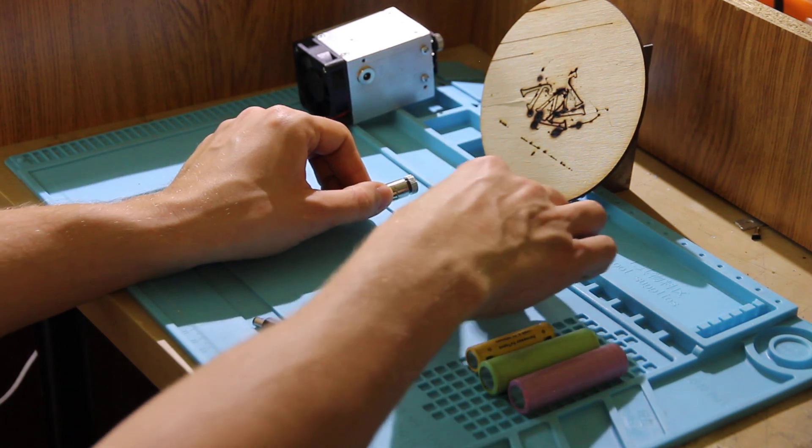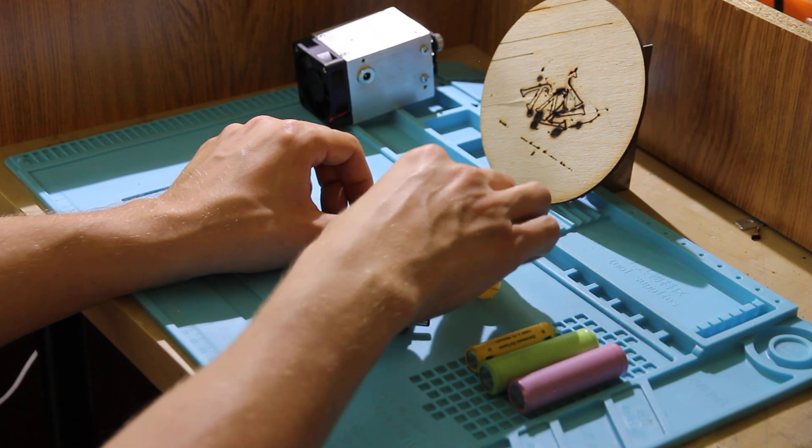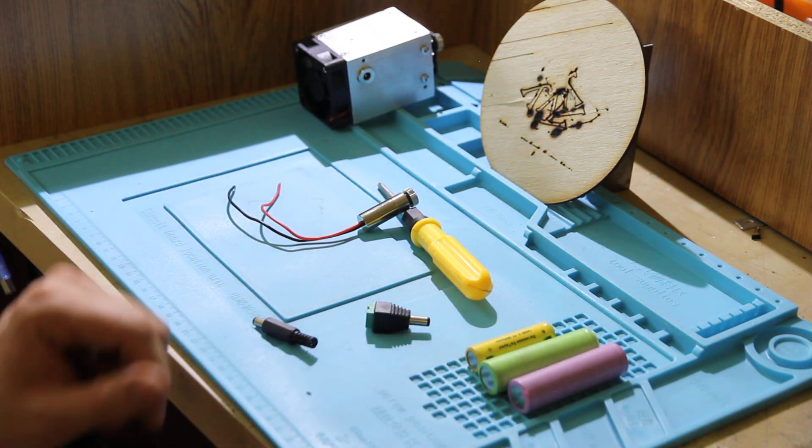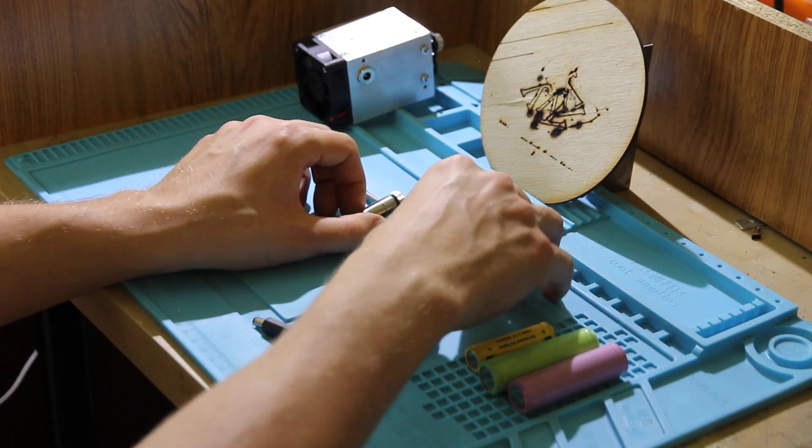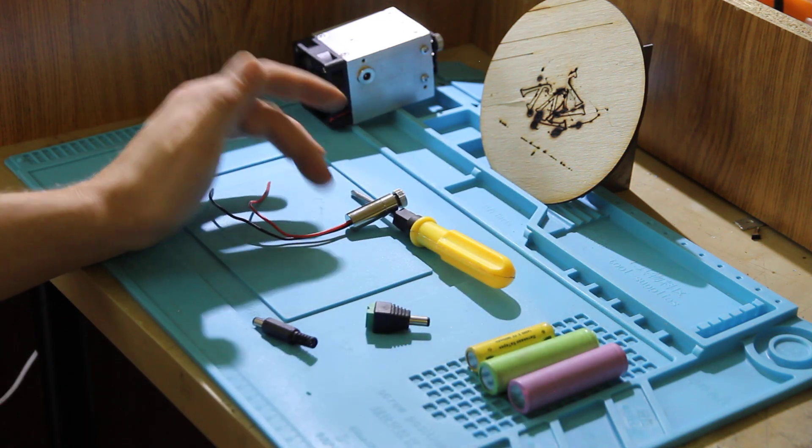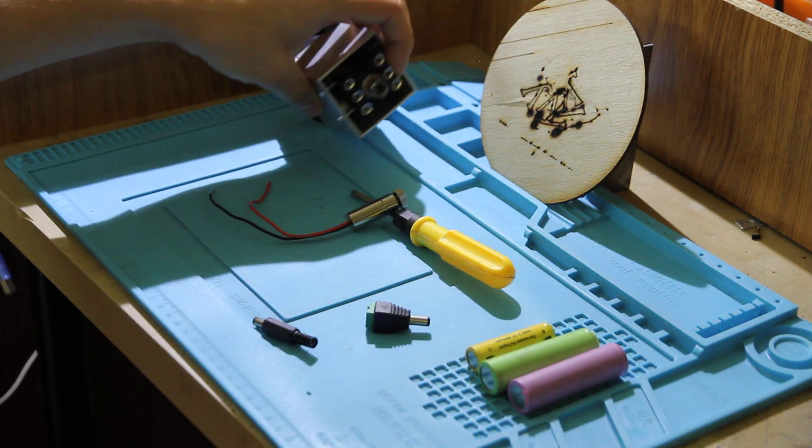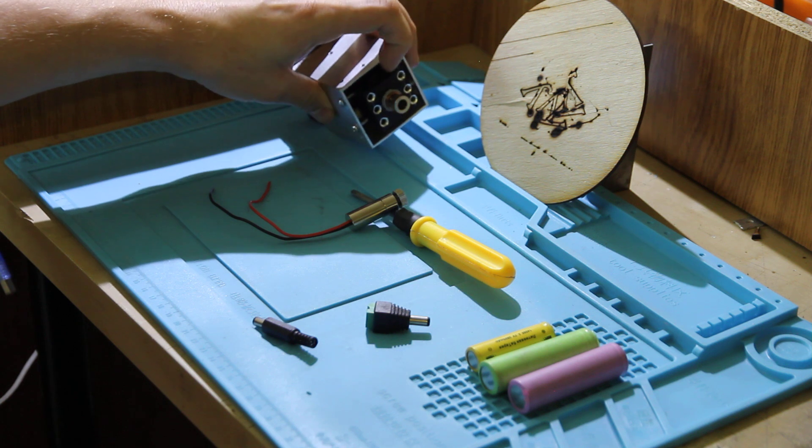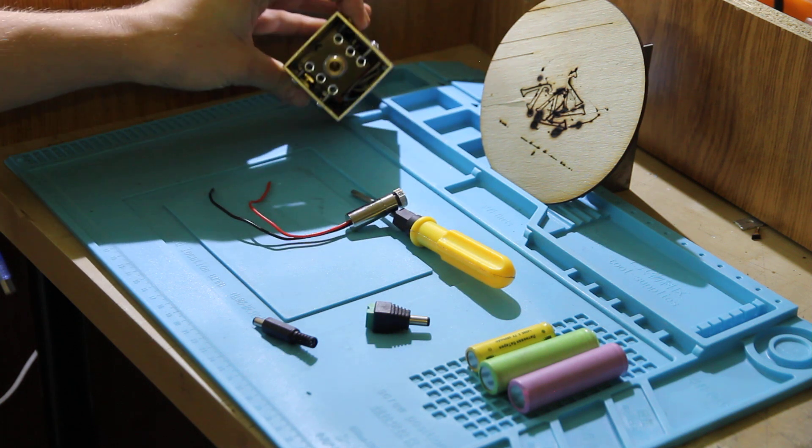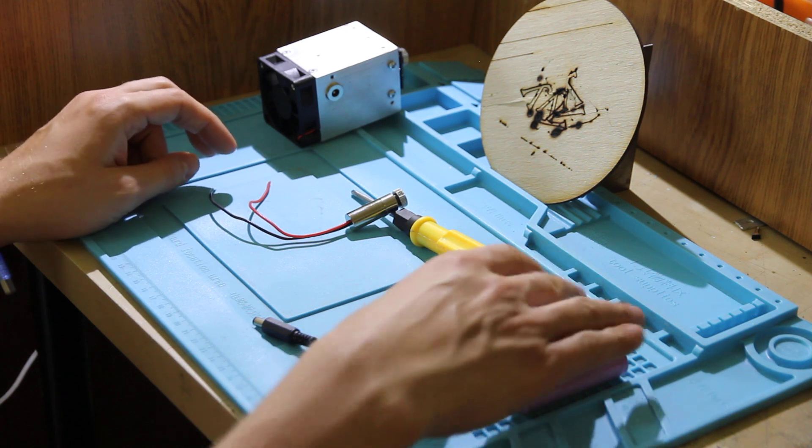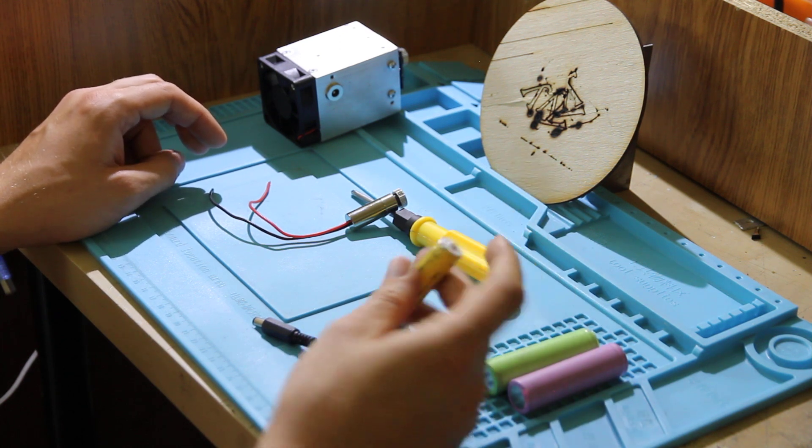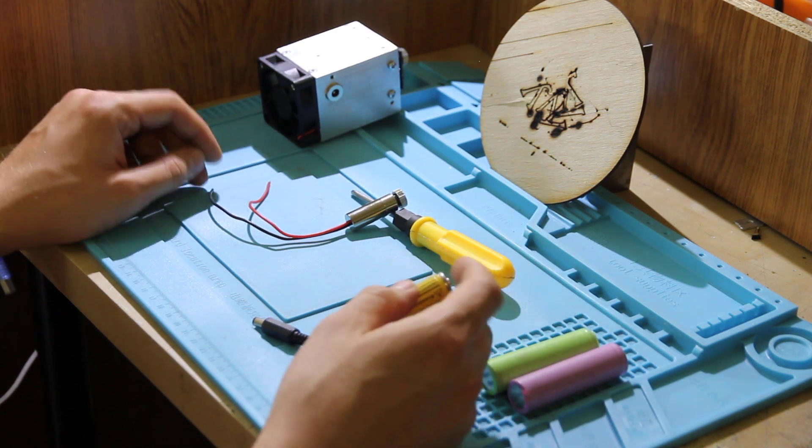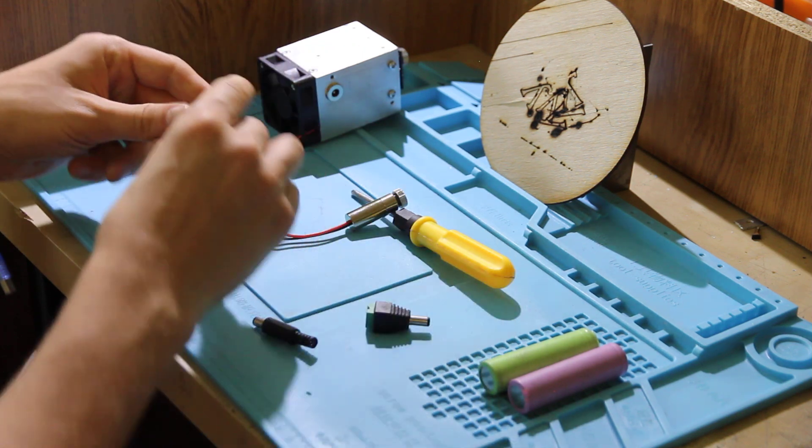You just remove the laser diode from, even if it's in a heat sink, from this metallic aluminum housing and then test it out. Don't ever miss polarity because that will kill the diode.